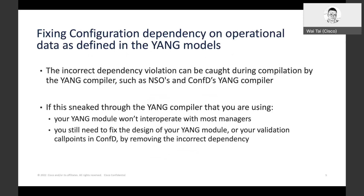So how do you catch these incorrect configuration dependency issues? If the problem is in the YANG model, they can be caught during the YANG compilation with YANG compiler tools such as NSO's NCSC compiler and ConfD's ConfD-C compiler. If this sneaks through your YANG compiler, your YANG module won't interoperate with most managers, if not all. However, you still need to fix the design of your YANG module. If validation is performed with custom runtime code, such as ConfD's validation call points, the incorrect dependency needs to be removed.